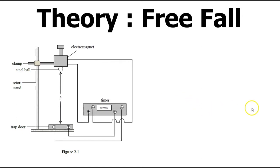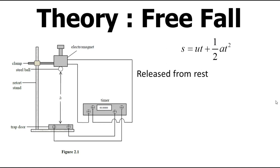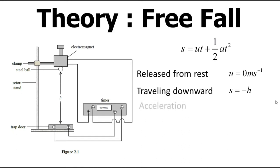The equation s = ut + ½at² is used to describe the motion of the steel ball. At the very start, the steel ball is at rest, so the initial velocity of the steel ball is zero. When the ball is released, it travels downwards. Because displacement is a vector quantity, the displacement of the steel ball is negative h. The gravitational force acting on the steel ball pulls it downwards, so the acceleration of the steel ball is taken to be negative g.